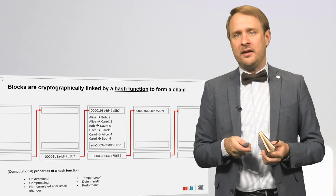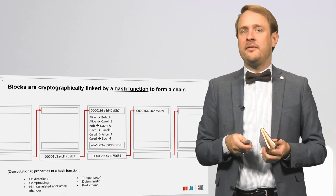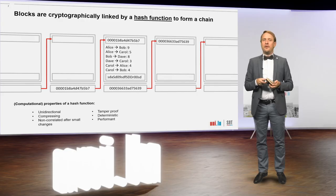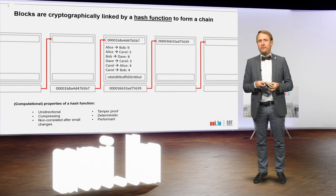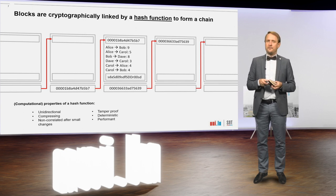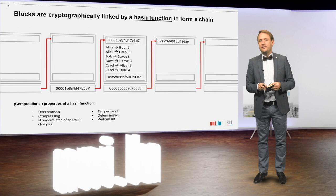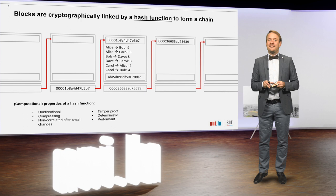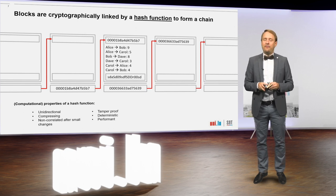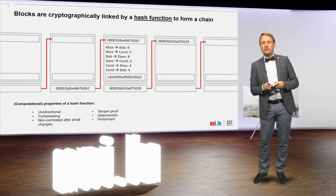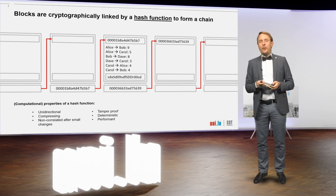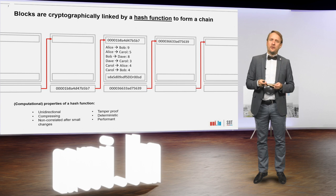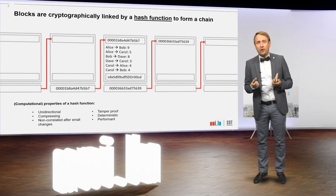This makes it quite hard for Alice to try to forge some of her previous transactions. You might have noticed that a hash function is also performant — everyone can quickly check if a hash value still matches the block's content. However, what stops Alice from just quickly recalculating and forging all the hash values of all following blocks? We somehow have to make it hard for Alice to do that.